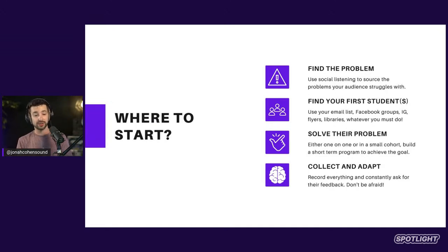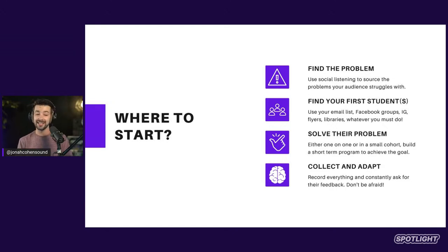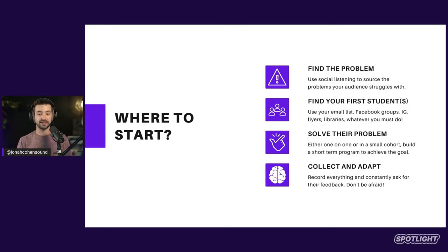The game plan for today: we are going to tackle each one of these challenges one at a time and give you actionable tools to overcome them. In summary, your repeatable blueprint is: find the problem — listen to your audience, source the problem. Then find your first five students who have that problem. Then solve their problem by coaching them through the solution and transformation you have built for them. And then collect, adapt, and turn that into a course.